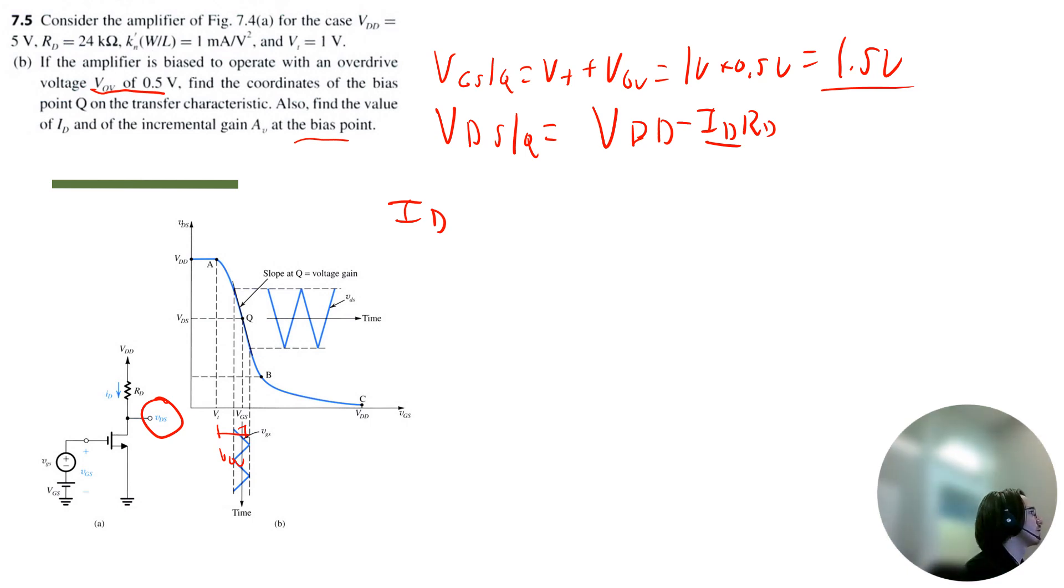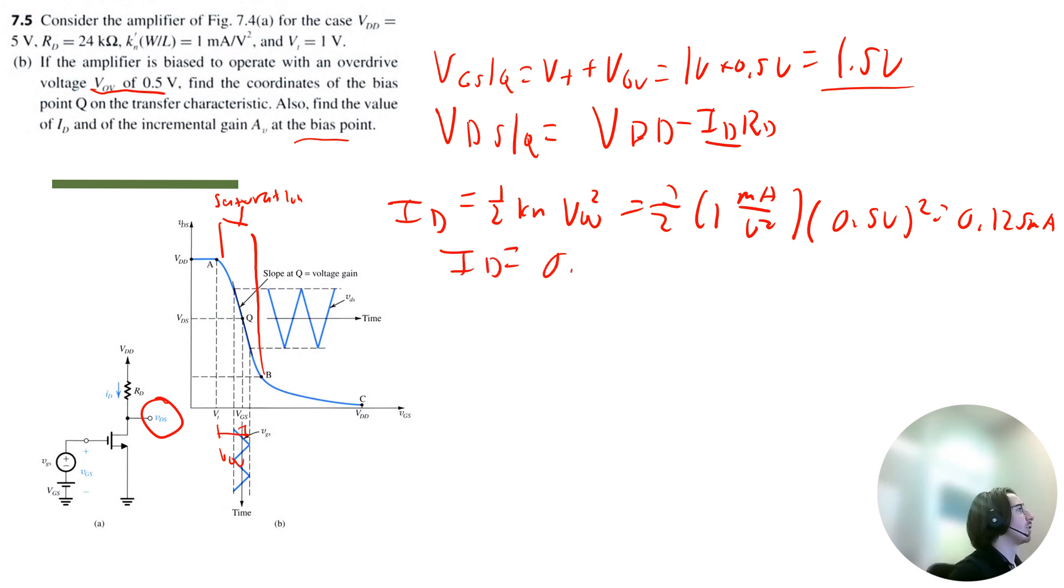So let's focus on ID now. If we look at this curve again, the points from A to B, this is the saturation region. So Q is in the saturation region. And then we can use the saturation region equation for drain current, which is 0.5 KN times V overdrive squared. That's 0.5 times 1 milliamp per volt squared times 0.5 volts squared, which is equal to 0.125 milliamps.